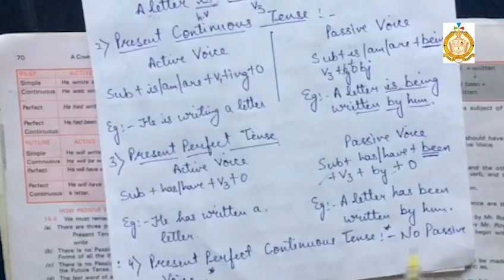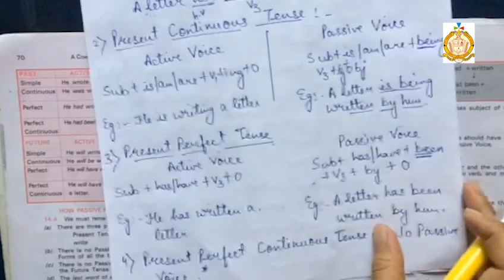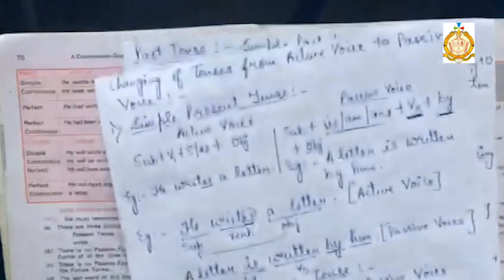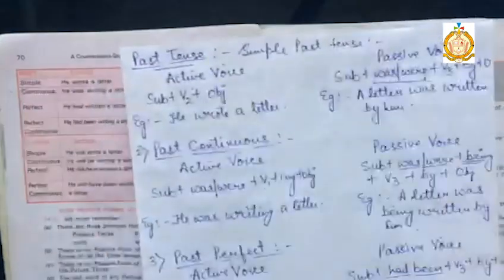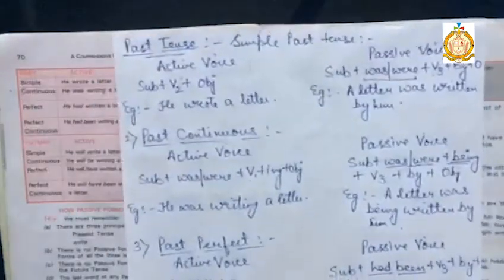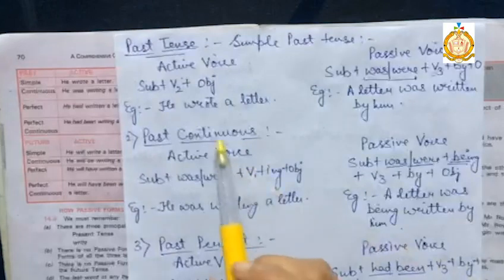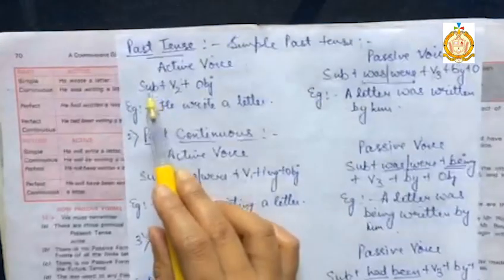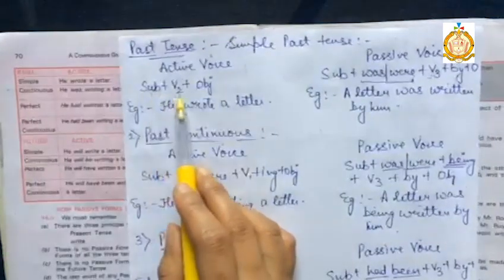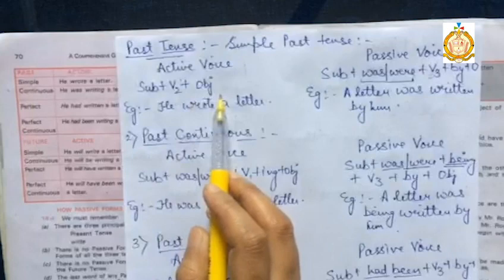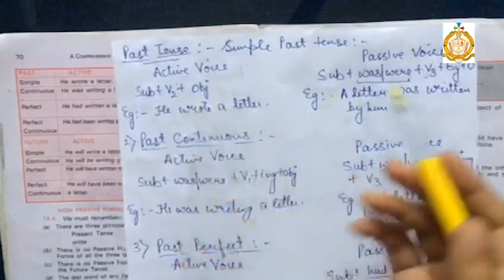There are some exceptional cases. Present perfect continuous tense cannot be changed into passive voice — it doesn't have any passive form. Now, if the sentence is in past tense, we know that the past tense formation is Subject + verb's second form + object.